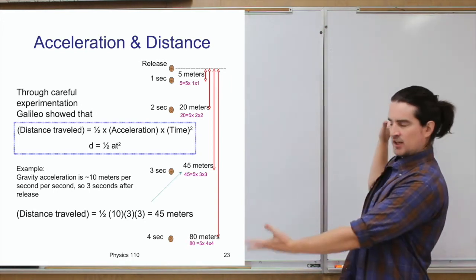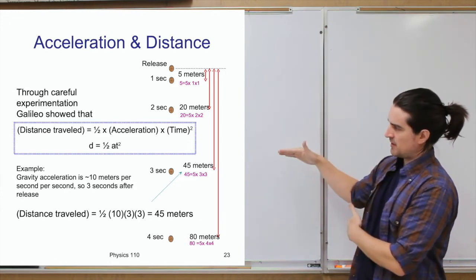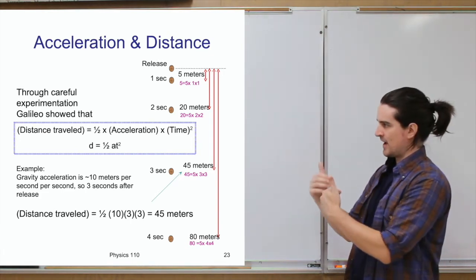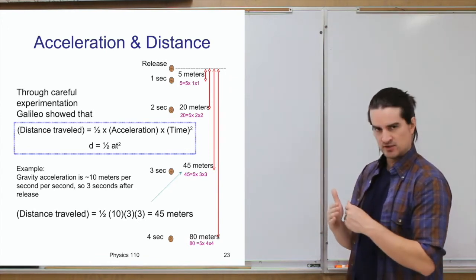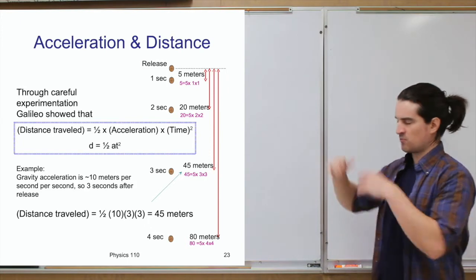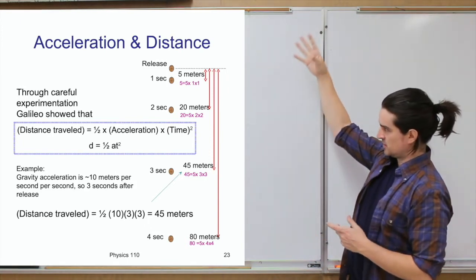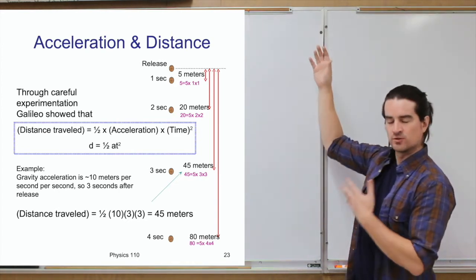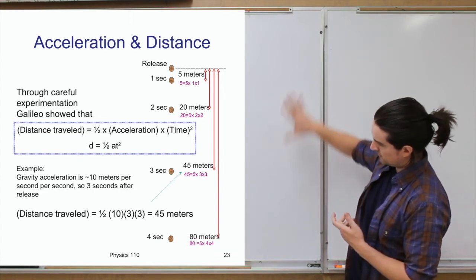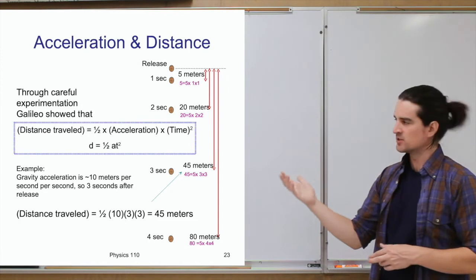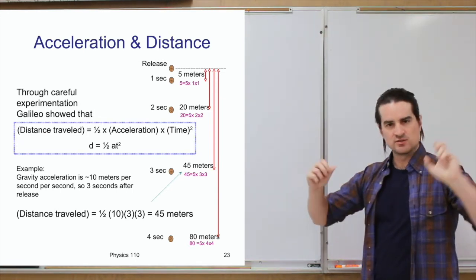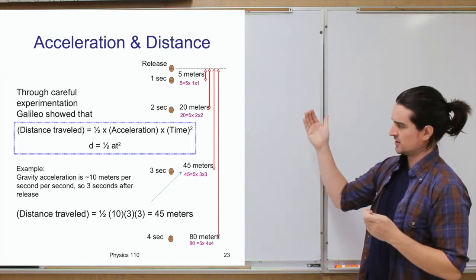That's written compactly as d = ½at², meaning distance equals one half times the acceleration the object is experiencing multiplied by the square of the time it travels. Compare this to the example given earlier — if you release an object, it goes five meters after one second, 20 after two, 45 after three, 80 after four — and Galileo's equation should reproduce these numbers.